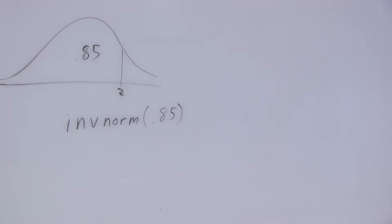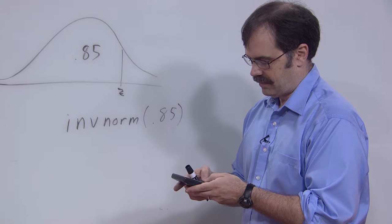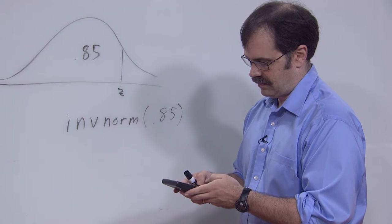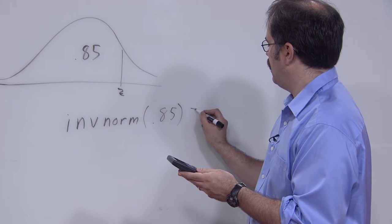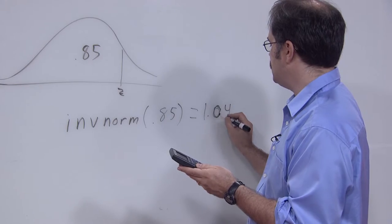And when you type that in on your calculator, what you'll get is 1.04, rounded to two decimal places.